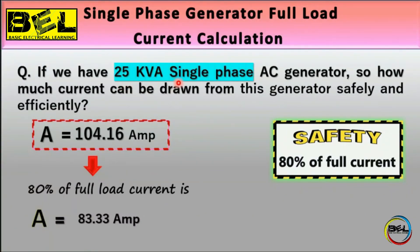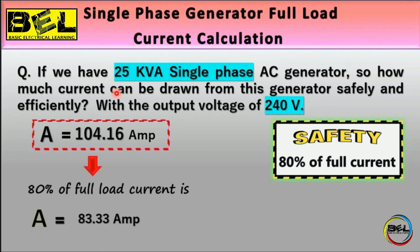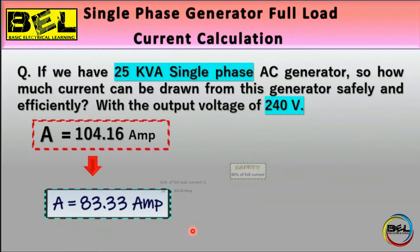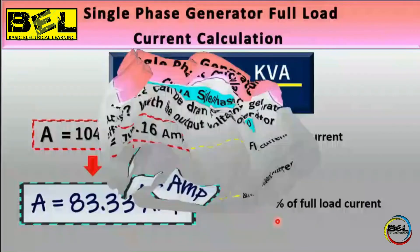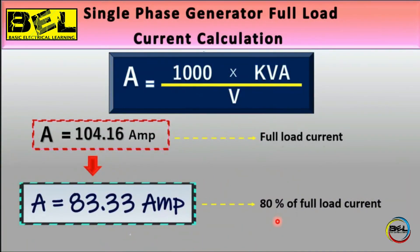In summary: for a 25 kVA single phase AC generator with 240 V output, the full load current is 104 amperes, and the safe operating current is 83.33 amperes — which is 80% of the full load current. We always apply 80% because of the power factor. The formula is: A = (1000 × kVA) / V, and this applies to single phase only. For three phase AC generator calculations, a separate link is provided.